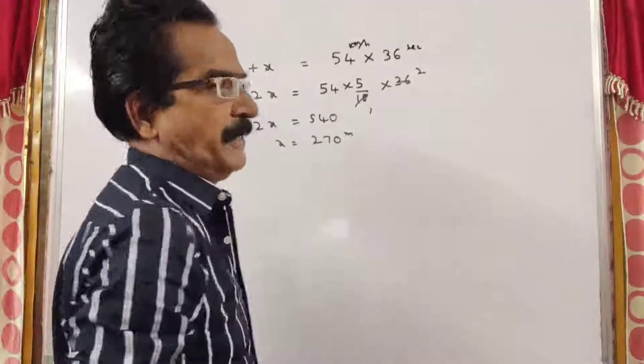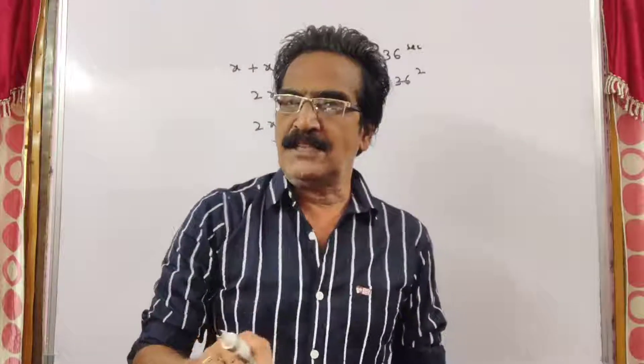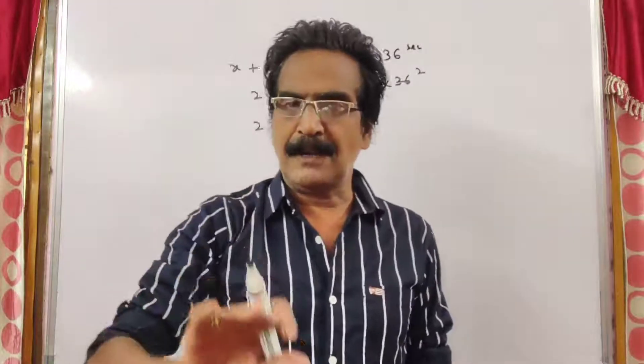X is equal to 270 meters. So the length of the train and the length of the platform are both 270.